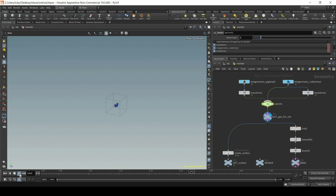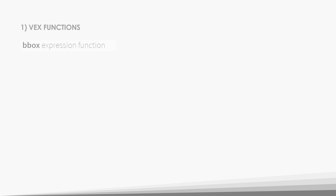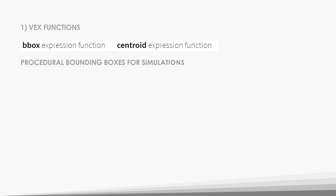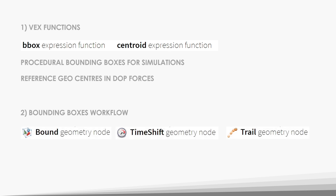Hey everyone, it's Vicky here, and in this tutorial we're going to look at two functions that are so useful that everyone should learn them as soon as possible. These are BBOX and Centroid VEX functions. They'll help us easily set up optimized simulation volume boundaries, use sublevel geometries for force centers, and many more. We'll also look at a neat workflow for setting up your simulation bounding boxes so you never ever have to worry about them again.